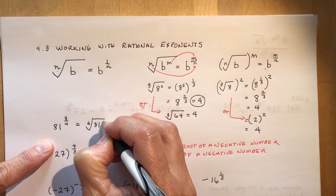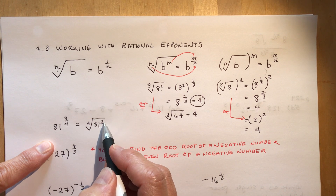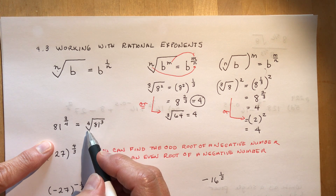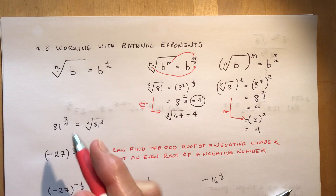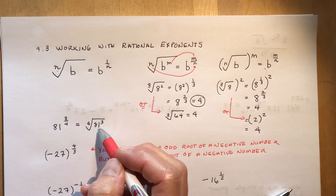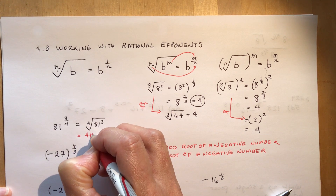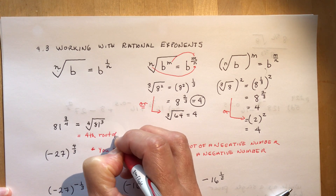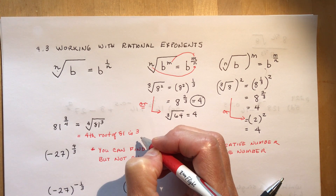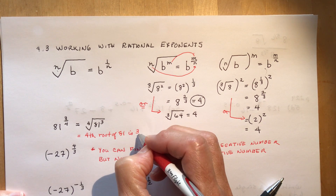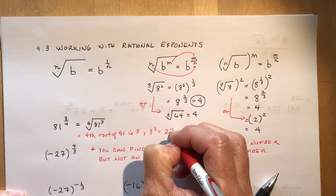For 81 to the three-quarters, you'd write that as the fourth root of 81 cubed. It's much more practical to find the fourth root of 81 first and then cube it, rather than cubing 81 first. The fourth root of 81 is 3, and 3 cubed is 27 — so that's your answer.